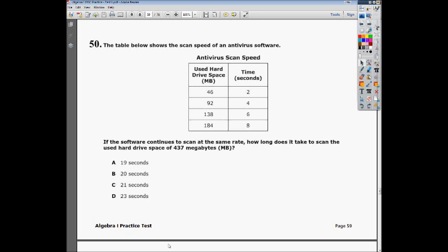The question says the table below shows the scan speed of an antivirus software. The antivirus scan speed looks at used hard drive space at 46, 92, 138, and 184 megabytes, and the time it takes: 2 seconds, 4 seconds, and so forth.